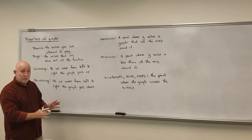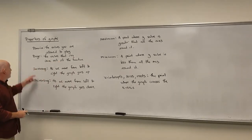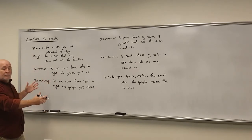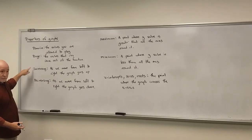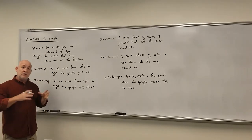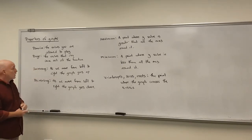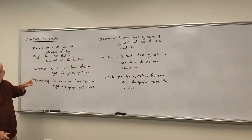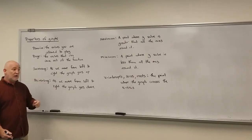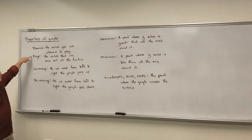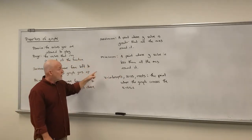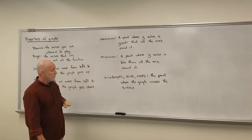Let's talk about what type of answers to expect. For domain, range, increasing, and decreasing, we're talking about regions — intervals — so we use interval notation. 99% of the time when we talk about where something occurs, we mean over which x-values. The only exception is range, which uses y-values. Maximums, minimums, and zeros are all points, so we give exact coordinate points for those.